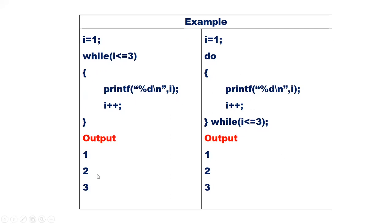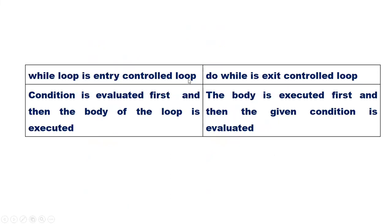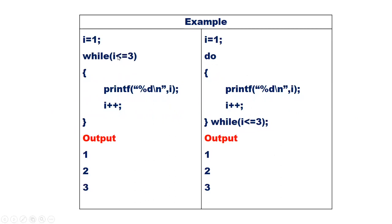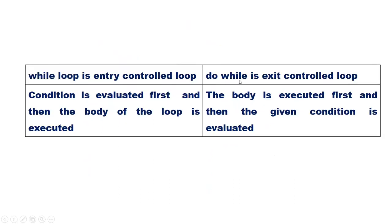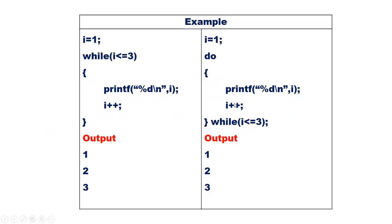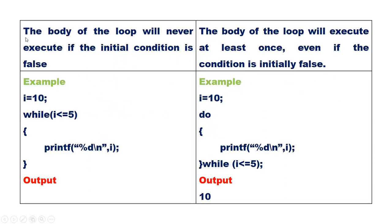Here the output is again 1, 2, and 3. In both cases we got the same output. While loop is an entry control loop, meaning the condition is evaluated first and then the body of the loop is executed. The condition i less than or equal to 3 is checked first, then the body is executed. In the case of do-while loop, it is an exit control loop — the body is executed first, and after executing the body, the condition is checked.